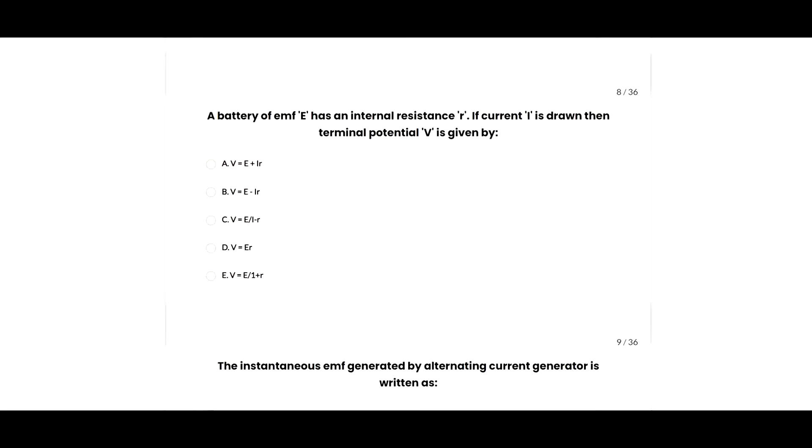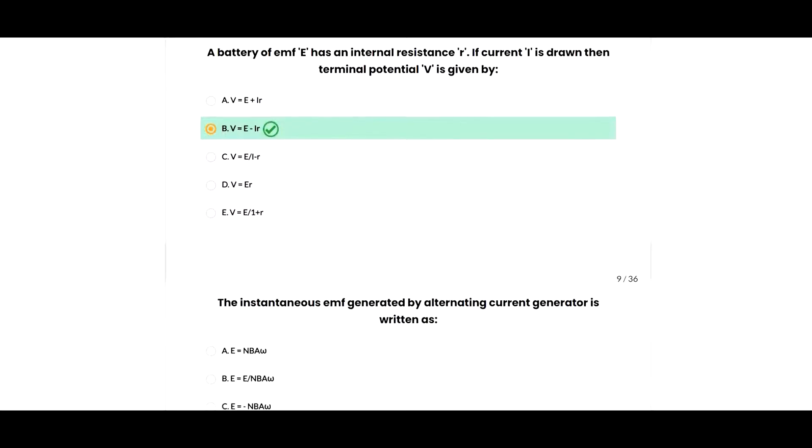Next question: a battery of internal resistance R, if current I is drawn, then terminal potential V will be given as V equals E minus IR, so B option is correct. Next question: the EMF generated by an alternating current generator is written as E equals NBA omega, so A option is correct.